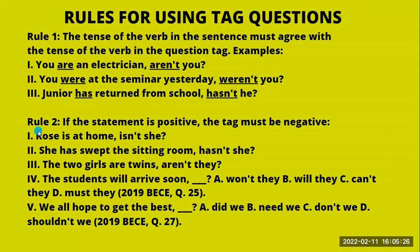Rule number two: if the statement is positive, the tag must be negative — what we call positive-negative. For example: 'Rose is at home, isn't she?' — 'is at home' is positive, and 'isn't she' is negative. Another example: 'She has swept the sitting room' is a positive statement, so the tag has to be negative — 'hasn't she?' Another example: 'The two girls are twins, aren't they?' — positive statement, negative tag.